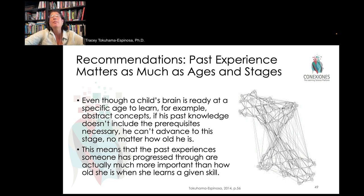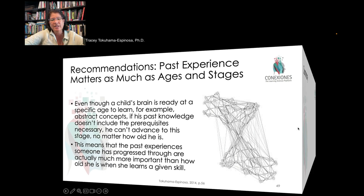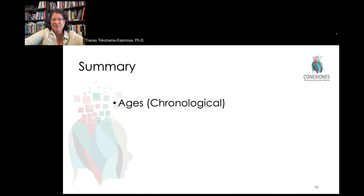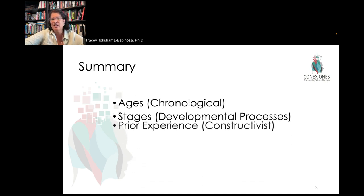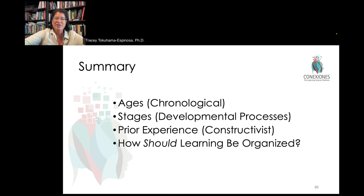Past experience matters as much or probably more than ages and stages, and we really do need to take that into consideration. You can't teach a kid if you don't know them — the more you know what that kid had or didn't have as input before they got to you, the better you can shore up their skills, build prerequisite knowledge, and establish that strong base for higher-order thinking. So we looked at chronological ages versus stages of development and the role of prior experience, leaving with this big question: how should schools really be designed if we know there's such huge variation within ages and stages?